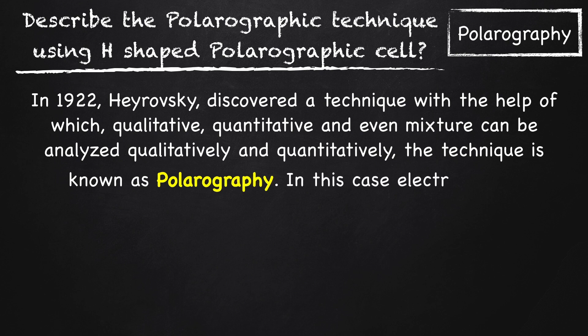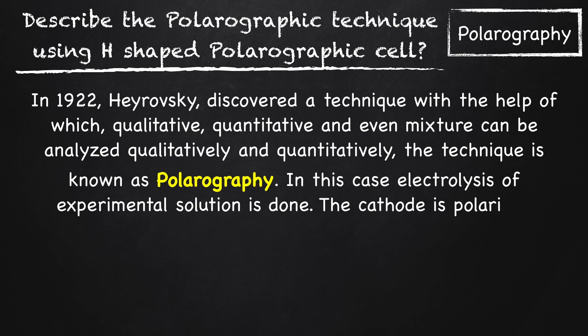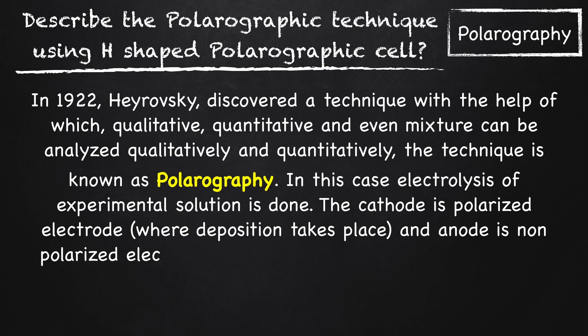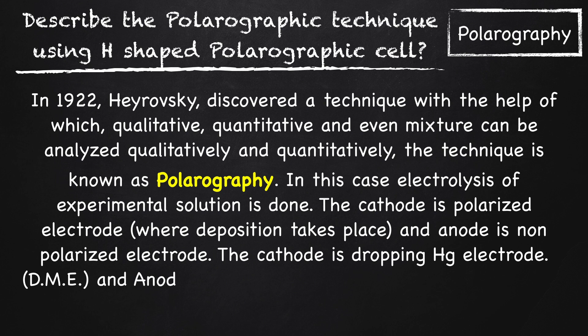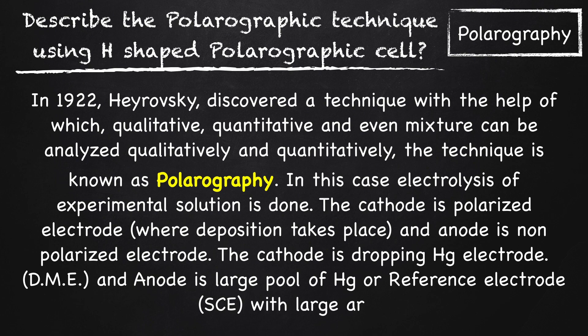In this technique, electrolysis of experimental solution is performed. The cathode is a polarized electrode where deposition takes place, and the anode is a non-polarized electrode. The cathode is a dropping mercury electrode, and the anode is a large pool of mercury or reference electrode such as saturated calomel electrode with large surface area.